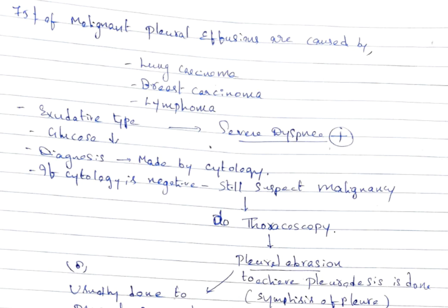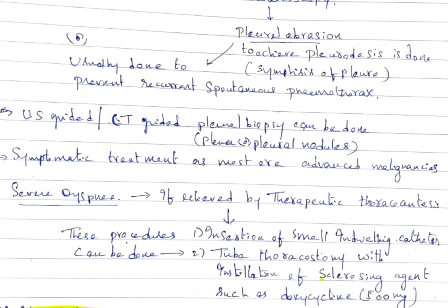Diagnosis is made by cytology. If cytology is negative but symptoms suggest malignancy, you can do thoracoscopy. In thoracoscopy, pleural abrasion can be done. Pleural abrasion is scraping of parietal pleura so that symphysis of pleura is done, meaning visceral and parietal pleura are attached so there's no accumulation of pleural fluid. It's generally done in recurrent spontaneous pneumothorax to prevent recurrence. Ultrasound-guided or CT-guided pleural biopsy can also be done.